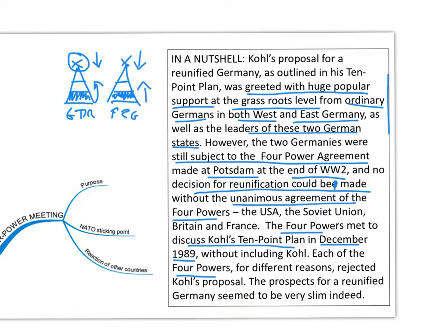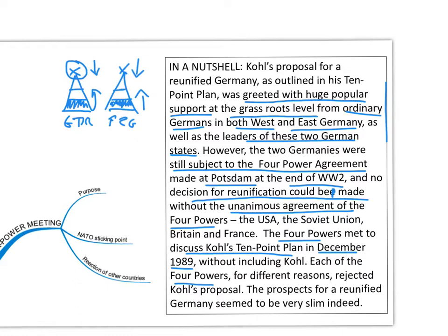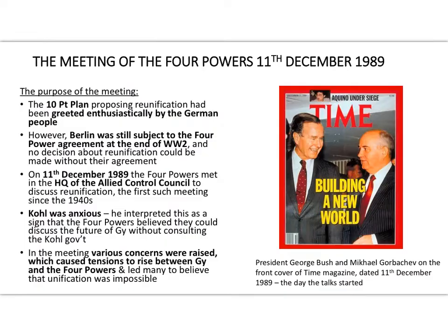This is December 1989 — before the events discussed in the last lesson. At that point it was Modrow, not de Maizière, who was the leader of East Germany. That situation changed from above in March 1990, three months later, so be aware of that shift that started to happen in the months after the first meeting of the four powers.